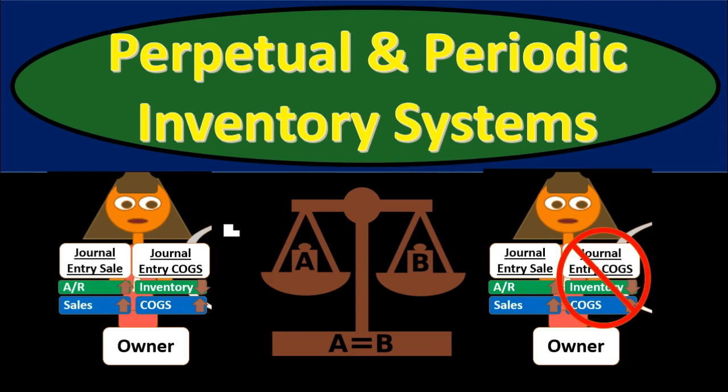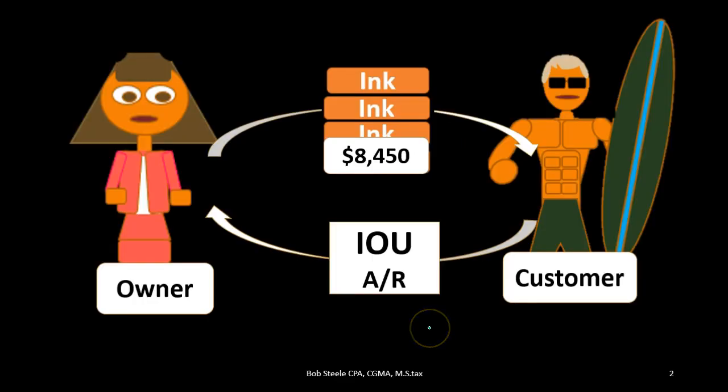In this presentation we will compare and contrast the perpetual and periodic inventory systems as we track inventory through the accounting process. First we're going to look at the perpetual system — the system we typically think of when recording transactions that deal with inventory. If a transaction doesn't say it's using a periodic or perpetual system, you probably want to default to the perpetual system.